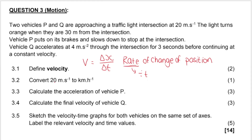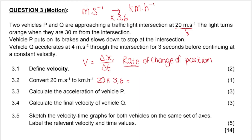My next question wants me to convert 20 meters per second to kilometers per hour. We've got two vehicles, P and Q, approaching a traffic light intersection at 20 meters per second. In this case it's a speed — no direction is given. To convert meters per second to kilometers per hour, we multiply by 3.6. Going the other way, from km/h to m/s, we divide by 3.6. So 20 m/s gives us 72 kilometers per hour.